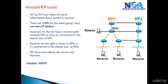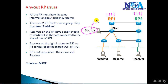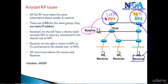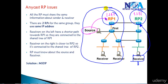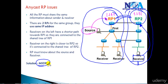One major concern with Anycast RP is the following scenario: both RPs are configured with 1.1.1.1. A source sends PIM register messages to the nearest RP1, while a receiver sends PIM join messages to the nearest RP2. The source cannot know about the receiver because they are registering to different RPs. RP1 and RP2 are essentially separate multicast domains, and we need a solution to combine them. That solution is MSDP.